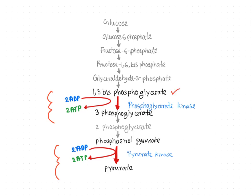In the first reaction, 1,3-bisphosphoglycerate is converted to 3-phosphoglycerate. In that step, one of the phosphate groups is transferred to ADP in order to make ATP. In the case of phosphoenolpyruvate to pyruvate conversion, the phosphate group is added to ADP and ultimately generates ATP.